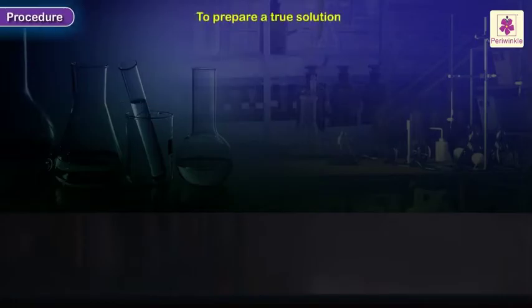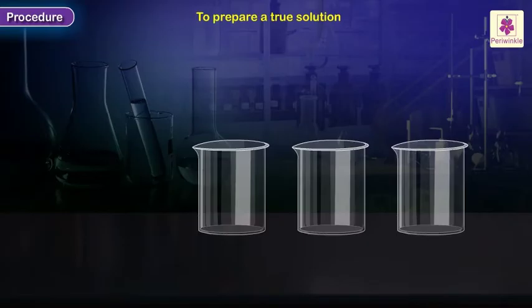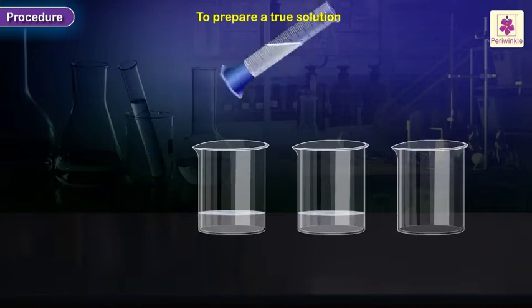Procedure: Take three clean beakers with 25 ml of distilled water in each. Label them as A, B, and C.